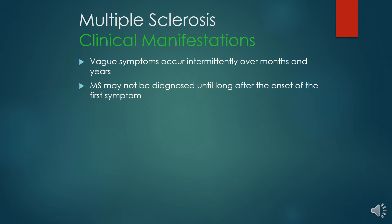Symptoms are usually vague and occur intermittently over months and years. Multiple Sclerosis may not be diagnosed until long after the onset of the first symptom. Patients with Multiple Sclerosis complain of symptoms separated with time and space that are not explained by a single lesion. As the disease progresses, permanent deficits accumulate. Symptoms include limb weakness, optic neuritis, paresthesias, diplopia, vertigo, nystagmus.